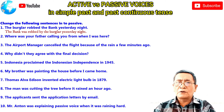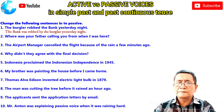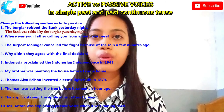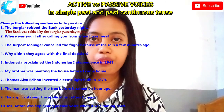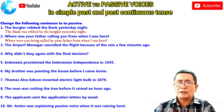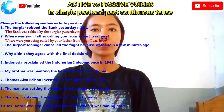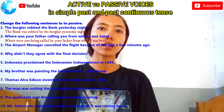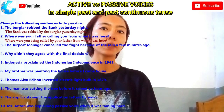Number two: 'Where was your father calling you from when I was here just now?' — Angi answers: 'Where were you being called by your father from when I was here?' That's right, very good. Number three: 'The airport manager cancelled the flight because of the rain a few minutes ago.' — Fallon answers: 'The flight was cancelled by the airport manager because of the rain a few minutes ago.' All right.